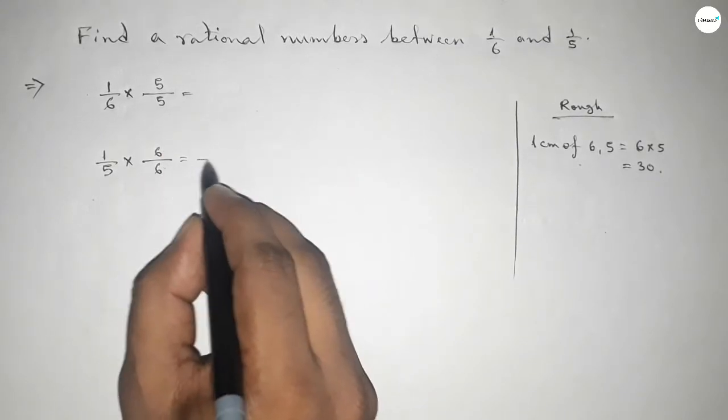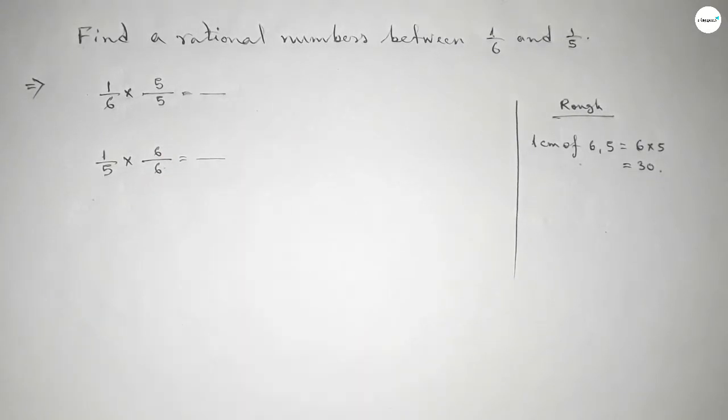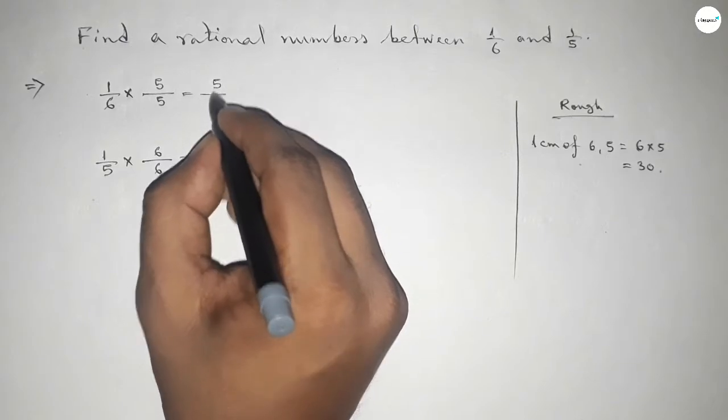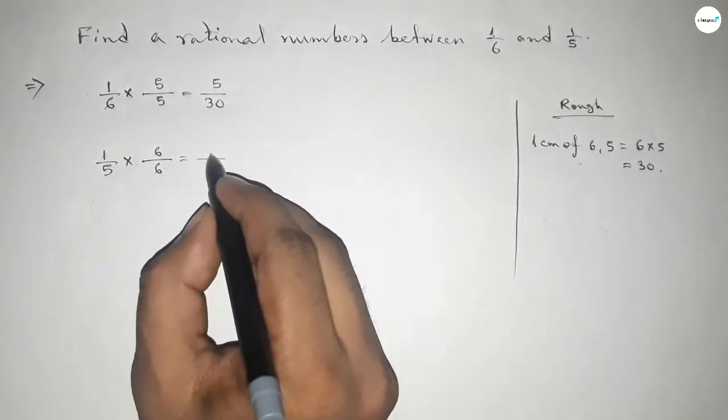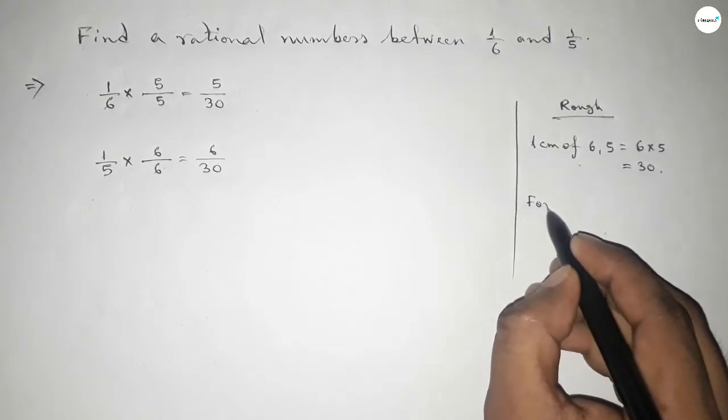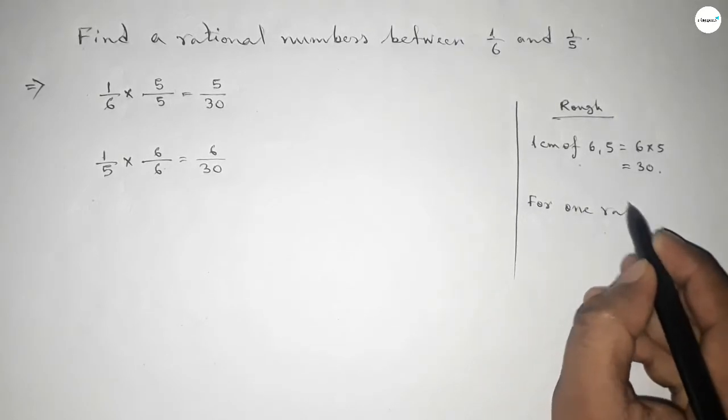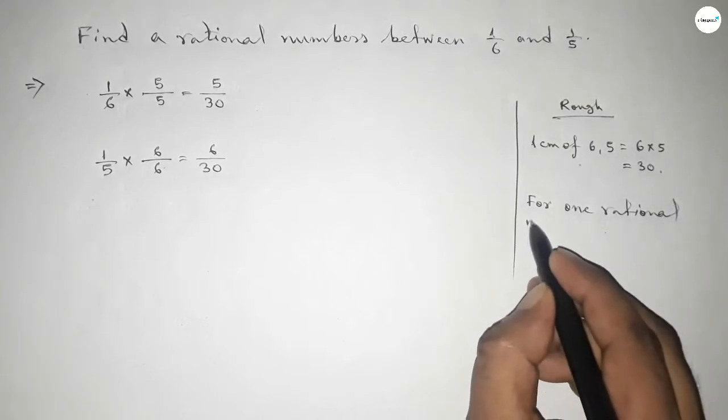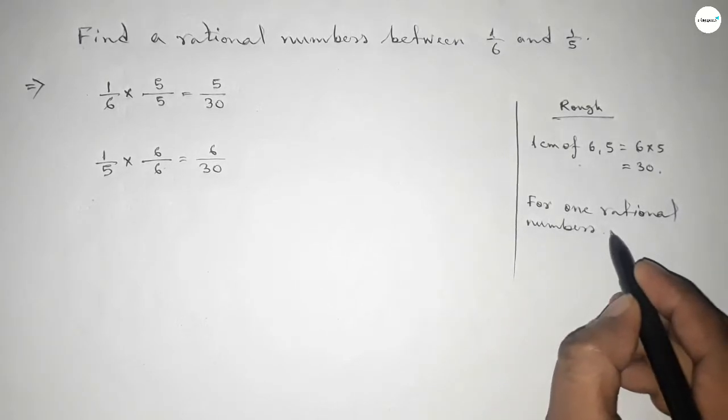And 6 here, then we can get the denominator of both as 30. So this is 5/30 and this is 6/30. Okay, now for one rational number between any two numbers, we have to follow this method.